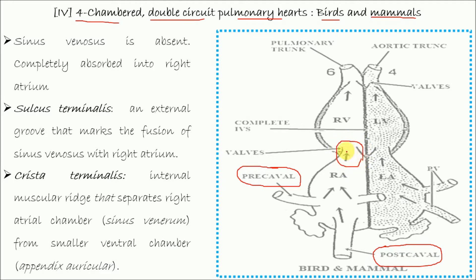In mammals, the right atrioventricular aperture is guarded by tricuspid valves, but in birds it is a muscular flap-like structure that controls blood movement and prevents regurgitation of blood from the right ventricle back to the right atrium when the ventricle contracts. The right ventricle leads into the pulmonary trunk.